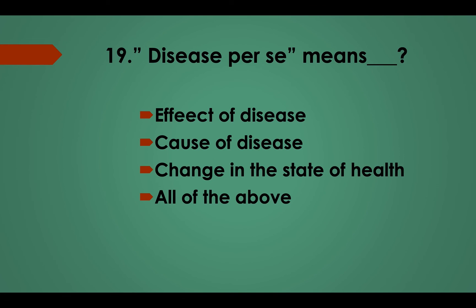Question No. 19: 'Disease perse' means: Option A, Effect of disease; Option B, Cause of disease; Option C, Change in the state of health; Option D, All of the above. Answer: Option C, Change in the state of health.